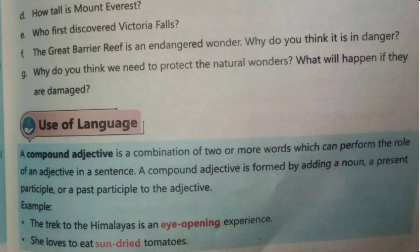Use of Language: Compound Adjective۔ A compound adjective is a combination of words which can perform the role of an adjective in a sentence — جو ایک جملے میں adjective کا کردار ادا کر سکے۔ A compound adjective is formed by adding a noun, present participle, or past participle with an adjective.